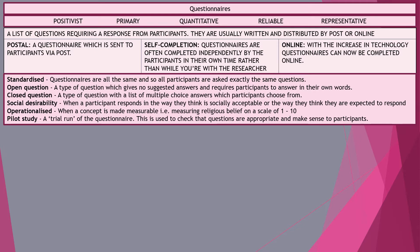Closed questions are selective questions where you have a multiple choice and must tick the most appropriate answer. Generally, questionnaires are more likely to use closed questions. While open questions do appear, the level of information gained through them is quite limited, so questionnaires tend to be considered closed, making them more likely to be quantitative and reliable, and less likely to yield qualitative data.